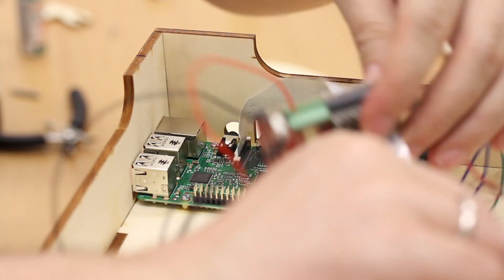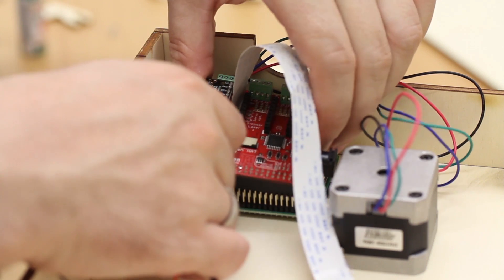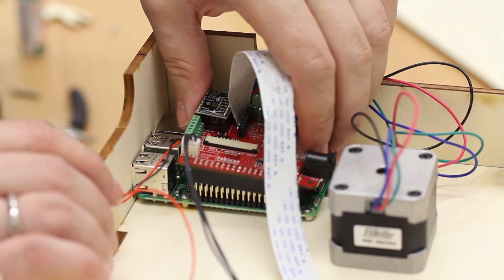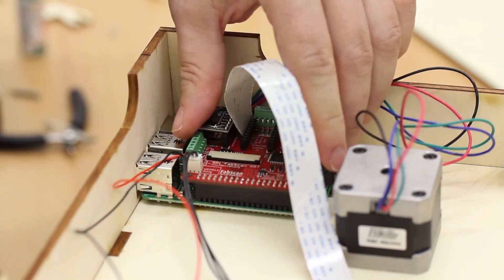And this holds the ribbon cable in place. Now we put the head on the Raspberry Pi. Be careful and make sure that you have it aligned so that the 40 pins are all inside of the connector.